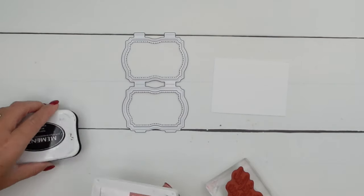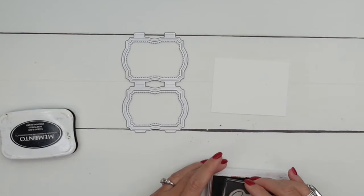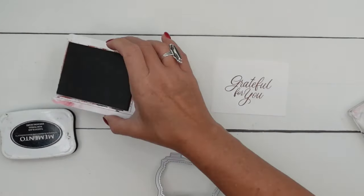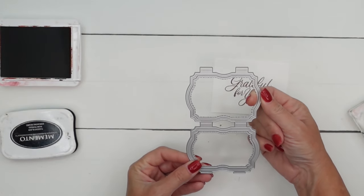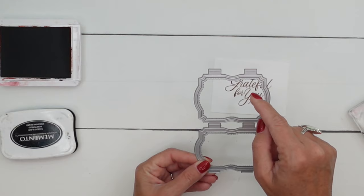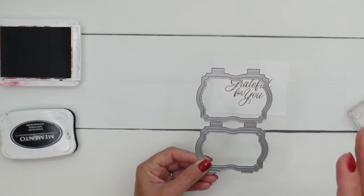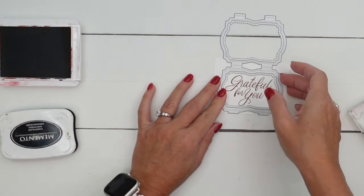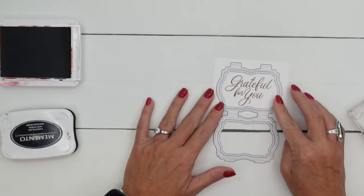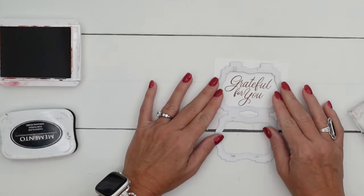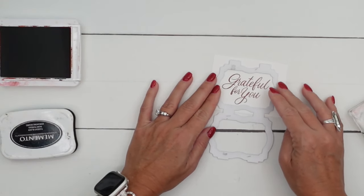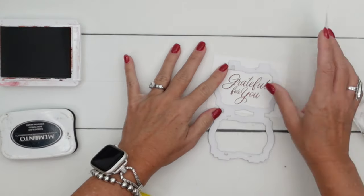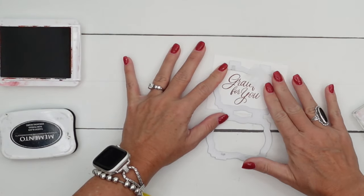So I've got a smaller piece of basic white, and I'm going to stamp grateful for you, right in the middle. And then we're going to cut it out. Now you'll notice that one side of the frame is skinnier than the other. The skinnier side means that the negative part will be larger. The fatter side means the negative part will be smaller. And I think it's better if you use the larger for this. See how that sentiment fits in there better if you do the larger opening. And I'm also going to grab some post-it tape because I really don't want this to move around when I'm die cutting it.